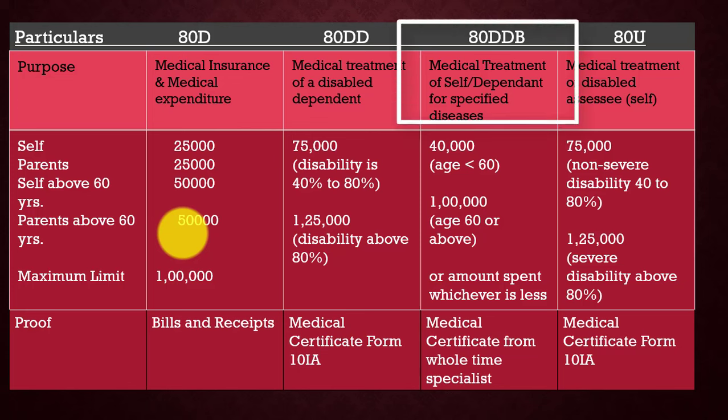The next section is Section 80DDB, which covers medical treatment of self or dependent for specified diseases. You can claim for self, or for dependent — brother, sister, spouse, or parents. The deduction limit under Section 80DDB is ₹40,000 if your age is 60 years and below. If the age is 60 years and above, you get up to ₹1,00,000 reduction, or whatever amount you have spent, whichever is less.